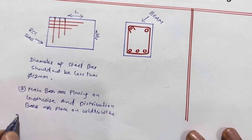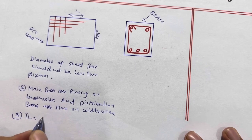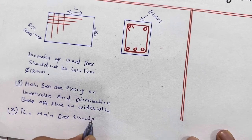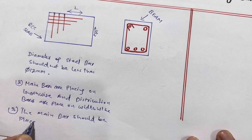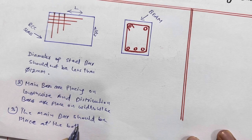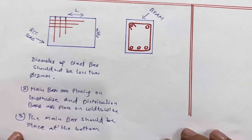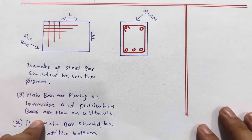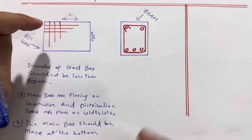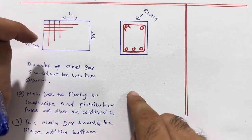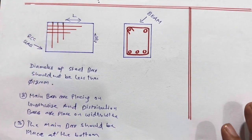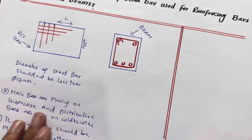Remember, the main bars should be placed at the bottom, and distribution bars should be placed on top of the main bars. When the load comes on top of the RCC slab, the distribution bars transfer the load to the main bars, and the main bars distribute the load to the beam. The beam transfers it to the column, and the column transfers it to the footing. This is the load transfer mechanism in an RCC slab.